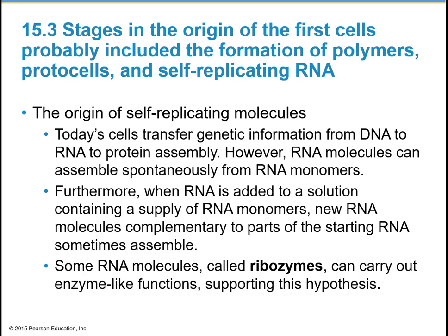However, RNA molecules can assemble spontaneously from RNA monomers when RNA is added to a solution containing a supply of RNA monomers — individual letters like adenine, guanine, cytosine, and uracil. New RNA molecules complementary to parts of the starting RNA molecules sometimes assemble. Some RNA molecules called ribozymes can carry out enzyme-like functions. Remember, an enzyme is typically made of protein and speeds up reactions in cells. Enzymes often end in the suffix -ase; for example, lipase breaks down lipids, and nuclease breaks down nucleic acids.